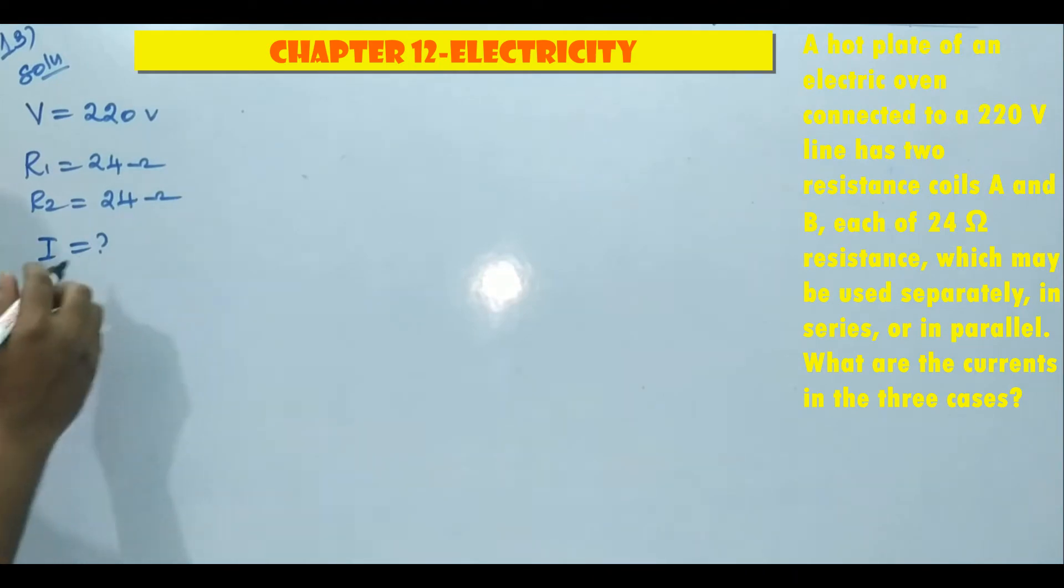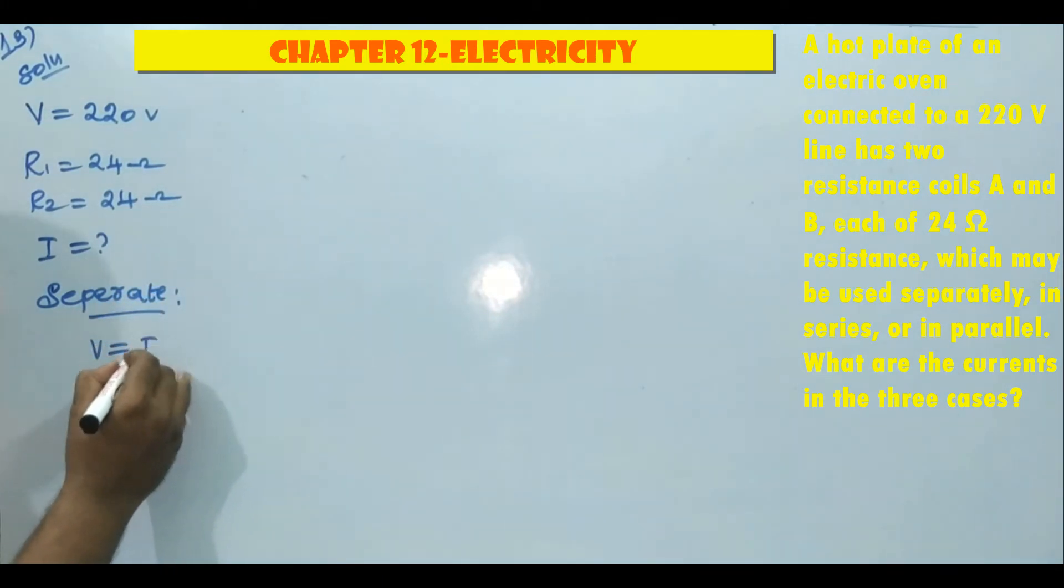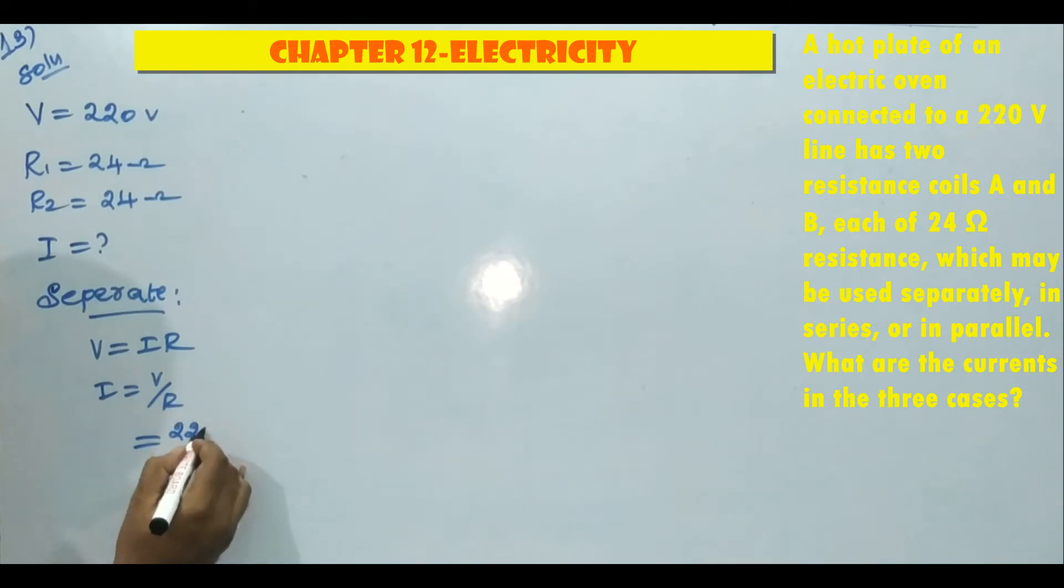First, we will find out separate. According to Ohm's law, V equals IR, then I equals V by R. V is 220 and R is 24, so I equals 9.17 ampere. If we connect separately in resistance, we will get current is 9.17 ampere. The second resistance is also 24, so for that also, we will get the same I value.